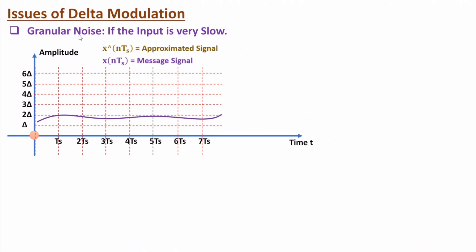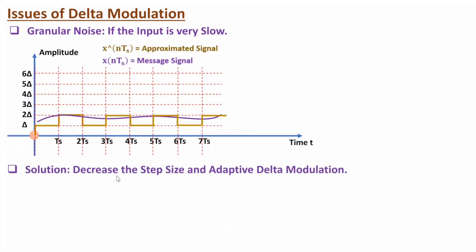Now let me discuss one more issue regarding slower input, referred to as granular noise. If your input is slower, the input is changing by minimal amplitude. Initially the message is greater than the approximated signal, so plus delta, then plus delta, then minus delta, plus delta, minus delta, plus delta — that is how the change in approximated signal occurs. So there is quantization error due to step size. To minimize this quantization error, the solution is to decrease step size or use adaptive delta modulation.